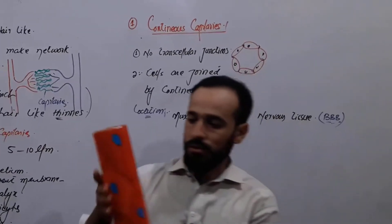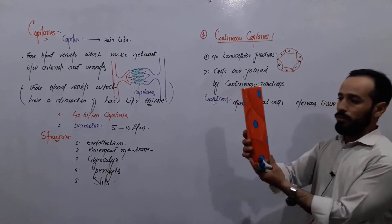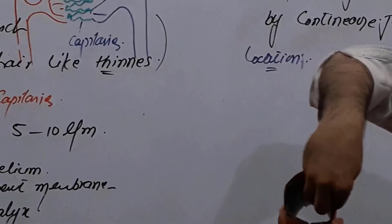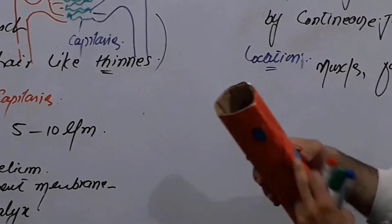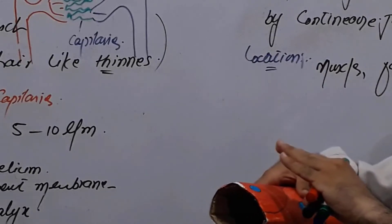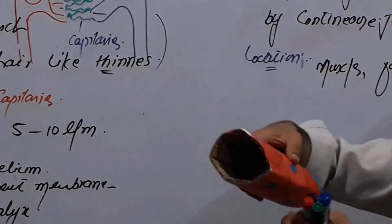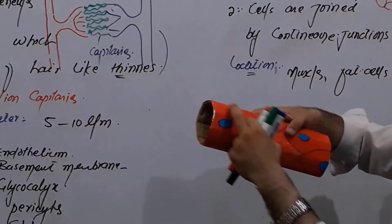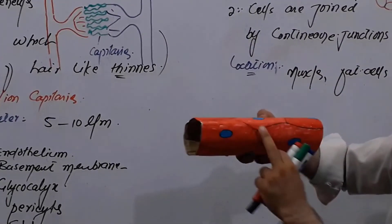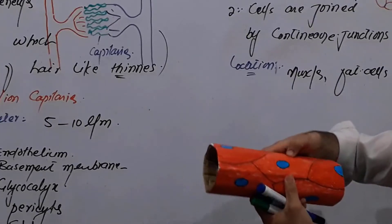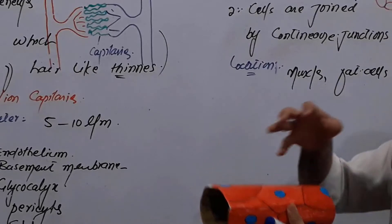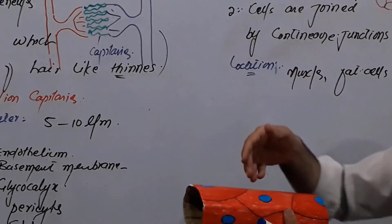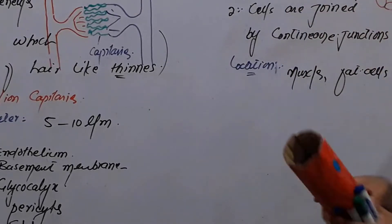Now look at this sketch. This is our continuous capillary. This is the lumen of the capillary, these are the endothelial cells, above we have the basement membrane, and then we have some pericytes. You can see that these endothelial cells are very close to each other — there are no special gap junctions, no transcellular junctions in between them.